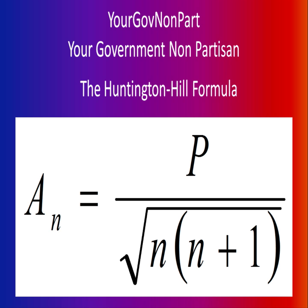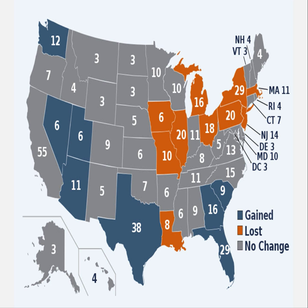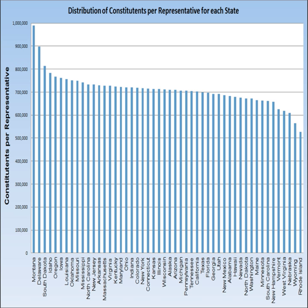This distribution is done by the Huntington-Hill formula, a recursive mathematical formula. Every state is allowed at least one representative, and the remaining 385 are put into this formula, and states go through a pecking order to see who gets the next available seat. This affects the Electoral College, because your number of electors equals your number of representatives plus your two senators — so certain states lost electors and some gained electors.